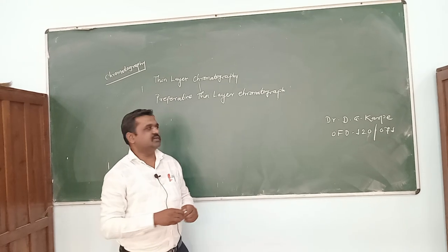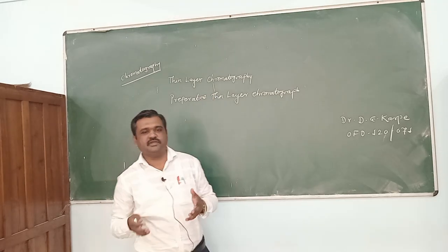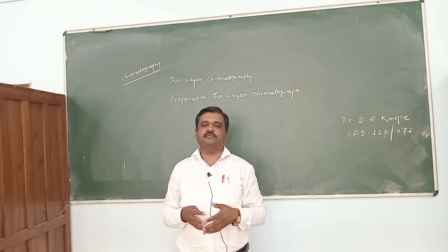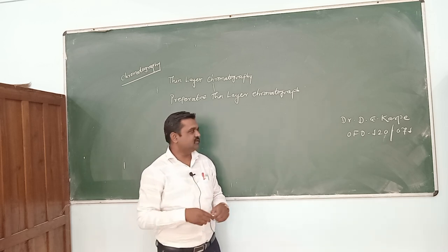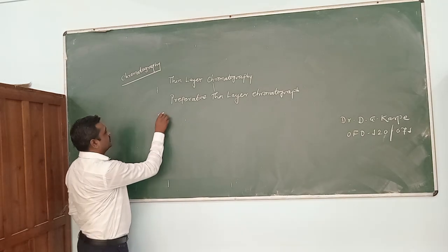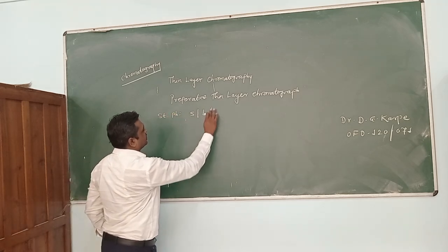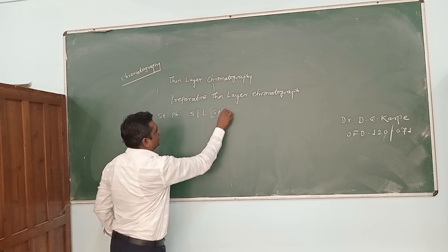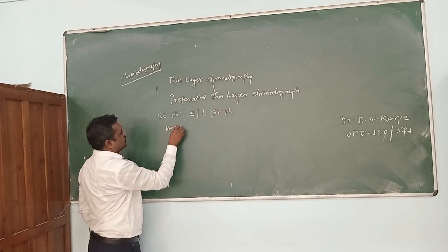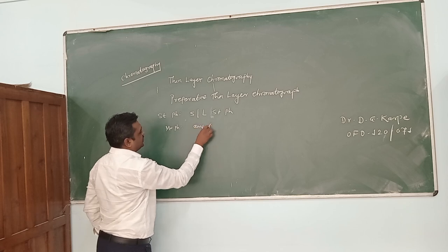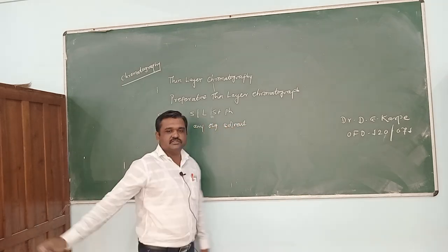Chromatography means chroma means color and graphy means separation. The separation of color components by chromatographic methods is carried out by using a stationary phase and a mobile phase. The stationary phase may consist of a solid or liquid stationary phase, and the mobile phase can be a unique organic solvent or buffers are also used.